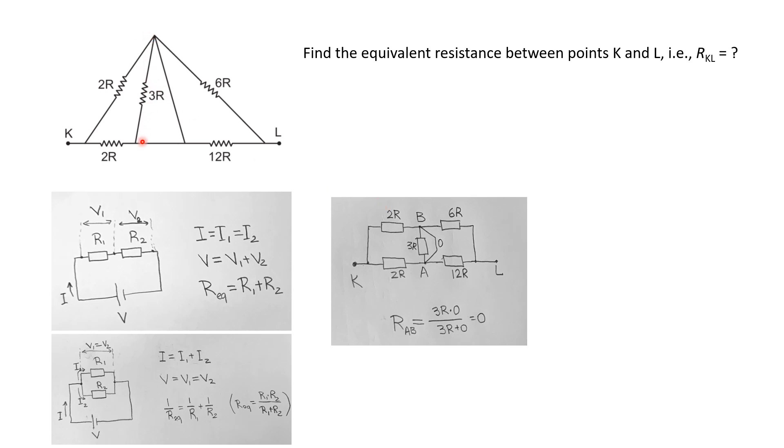Then you have 3R in parallel with this wire. They're connected essentially at the same point because there are no resistors here and the potential drop is zero, so you can represent this with a wire whose resistance is zero. Then you have 6R and 12R on this side, which combine and go towards point L.